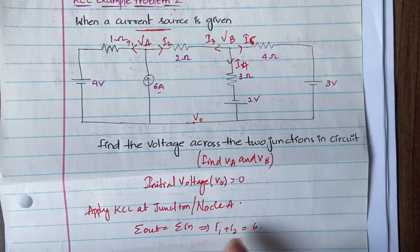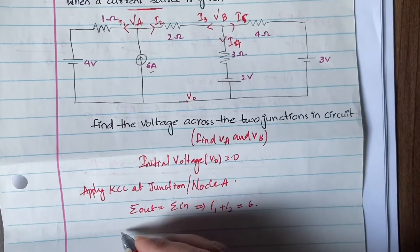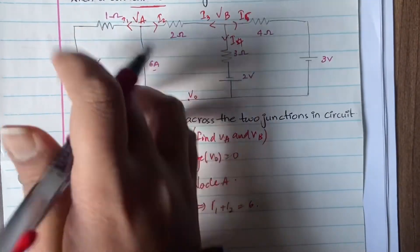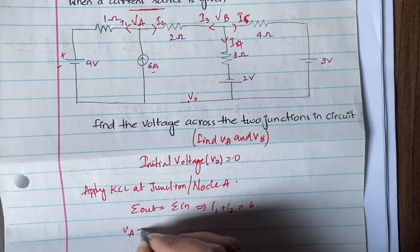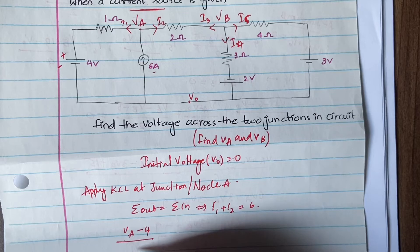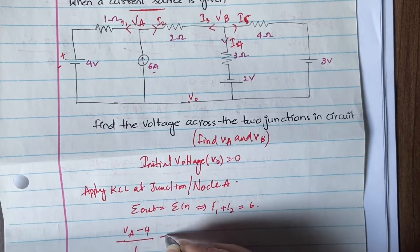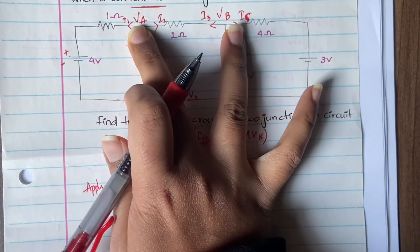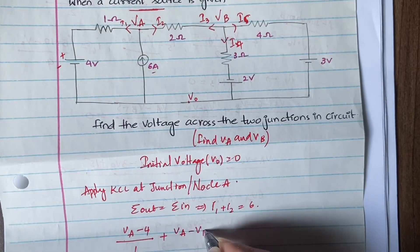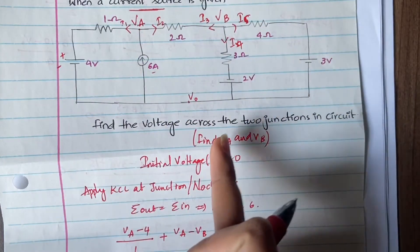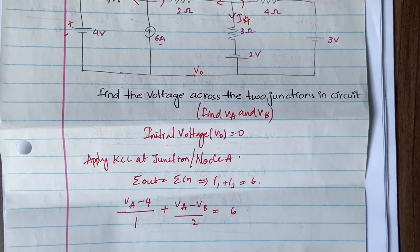Now let us write the equations for i1 and i2. For i1, current flows from Va, so Va is at higher potential. With a 1-ohm resistor, i1 = (Va − 4) / 1. For i2, current flows from Va to Vb, so Va is at higher potential and Vb is at lower potential. Therefore i2 = (Va − Vb) / 2. The full equation for junction A becomes: (Va − 4)/1 + (Va − Vb)/2 = 6.